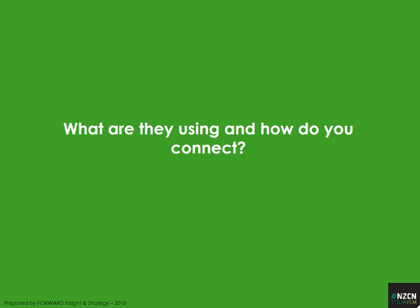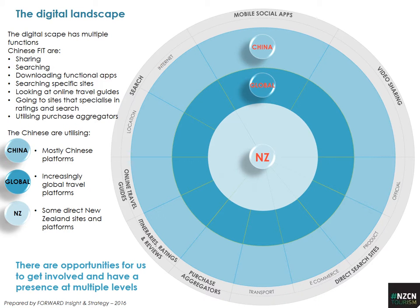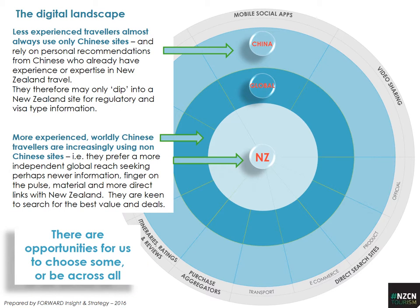So what are our Chinese visitors using, where do you need to be, and how do you connect? There are mobile social apps, video sharing platforms, direct search sites including transport, purchase aggregators, itinerary rating and review sites, planning sites, online travel guides, and general search sites. While what people are doing is similar to what we do, they're doing more of it and using different platforms. Less experienced travellers mostly use China sites, while more worldly, high-end travellers use New Zealand and global sites more.